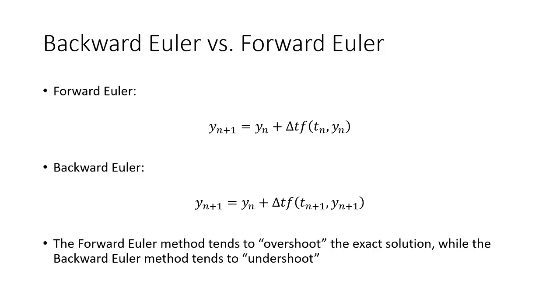Qualitatively, the forward Euler method tends to overshoot our exact solution, basically overestimate the slope, while the backward Euler method tends to undershoot. We'll kind of see more what that looks like when we do our MATLAB example and compare the two methods.